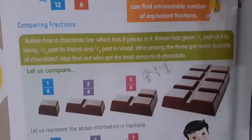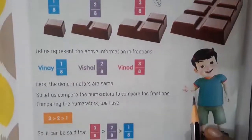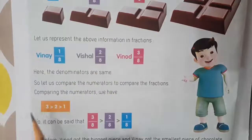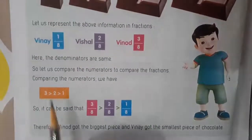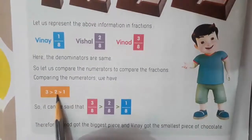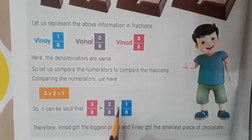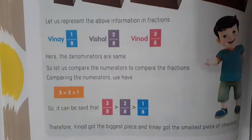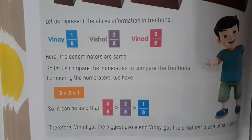3 by 8 is the highest, meaning more quantity. Who got 3 by 8 part? Vinod. So Vinod got more quantity of chocolate. Representing this information as fractions: 1 by 8, 2 by 8, 3 by 8 — the denominators are the same, so we compare the numerators. 3 is greater than 2, and 2 is greater than 1. So 3 by 8 is greater than 1 by 8. Therefore Vinod got the biggest piece and Vinay got the smallest piece of chocolate.